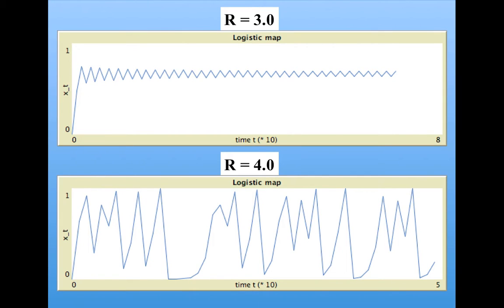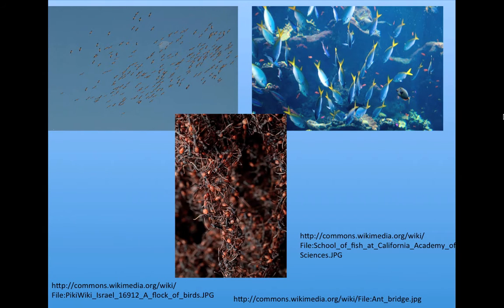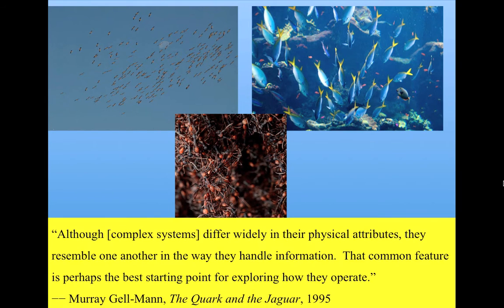But another key to the phenomenon of self-organization is the concept of information. In order to understand the phenomenon of self-organization, we need to understand how information is represented, communicated, and processed in complex systems. As said by the physicist Murray Gell-Mann, although complex systems differ widely in their physical attributes, they resemble one another in the way that they handle information. That common feature is perhaps the best starting point for exploring how they operate.